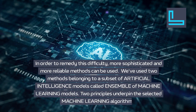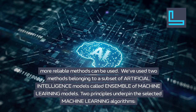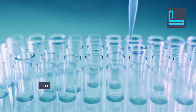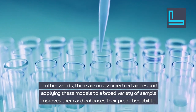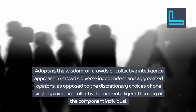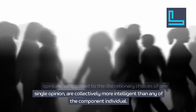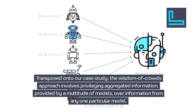To remedy this, more sophisticated and more reliable methods can be used. We have used two methods belonging to a subset of artificial intelligence models called ensemble machine learning models. Two principles underpin the selected algorithms: first, applying the practice-makes-perfect approach — there are no assumed certainties, and applying these models to a broad variety of samples improves them and enhances their predictive ability. Second, adopting the wisdom-of-crowds approach — a crowd's diverse, independent, and aggregated opinions are collectively more intelligent than any single opinion. Transposed onto our case study, this involves privileging aggregated information from a multitude of models over information from any one particular model.